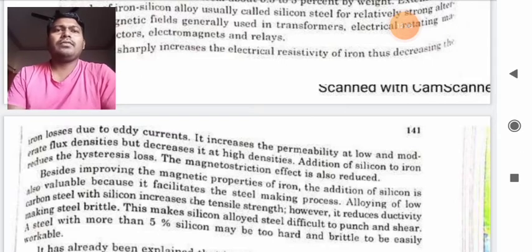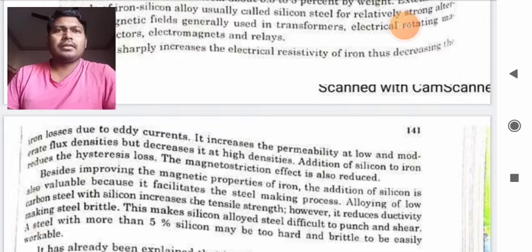This makes silicon steel difficult to punch and shear. A steel with more than 5% of silicon may be too hard and brittle to be easily workable.